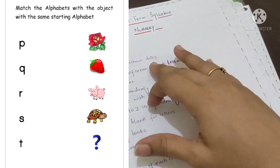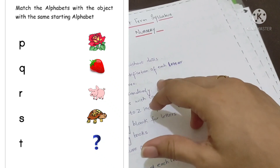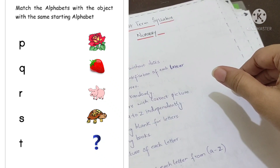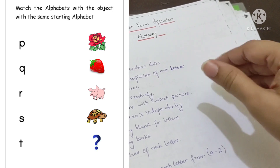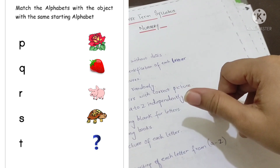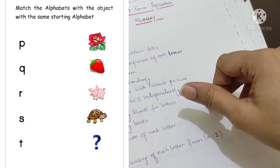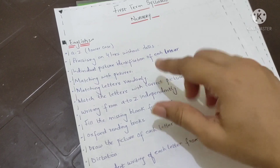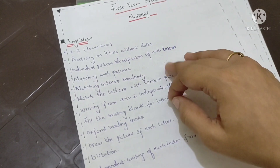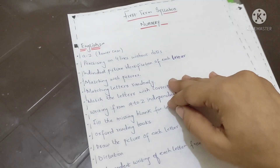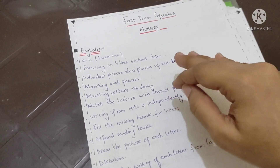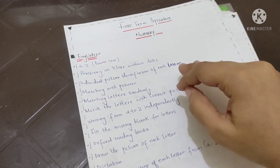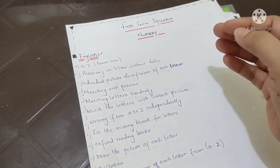Over here they are already familiar with the formation, which they did in the previous class with the help of dots — joining the dots and forming the letters. Now we are introducing how they can write on four lines.